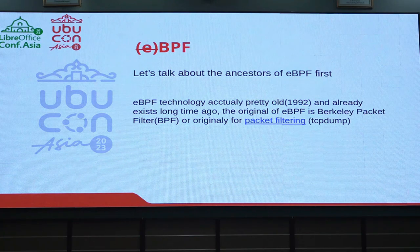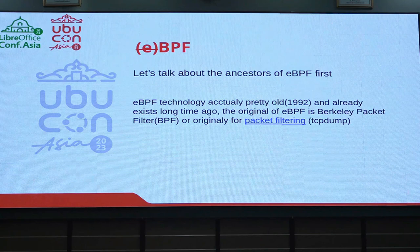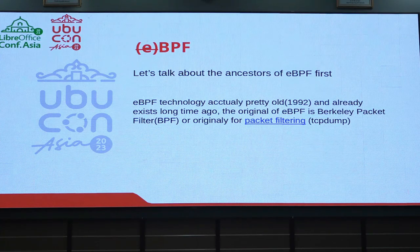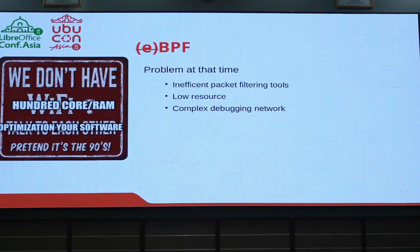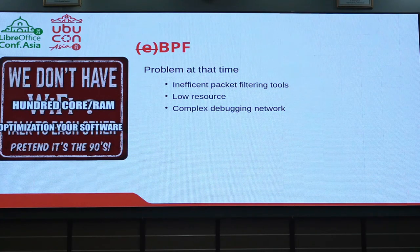First, let's talk about BPF — the ancestor. The technology was actually pretty old; it was 1992. It was originally developed at Berkeley University, and its original purpose was for packet filtering — for example, tcpdump. At that time in 1992, we didn't have 100-core CPUs, so the way to solve problems was to optimize your software. The problems at the time were inefficient packet filtering, low resources, and complex network debugging.